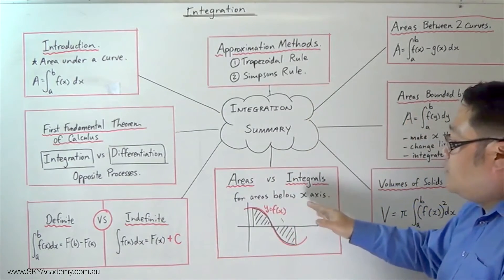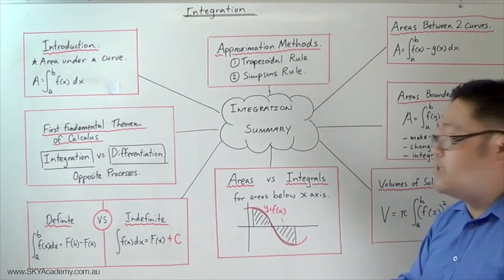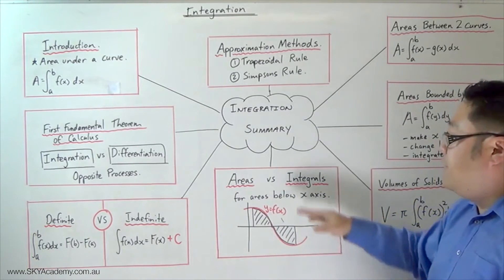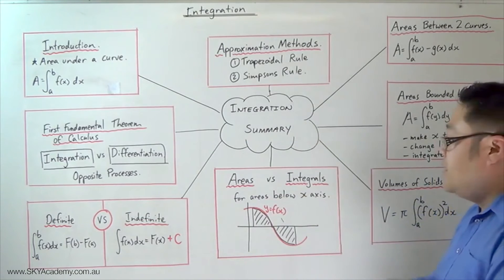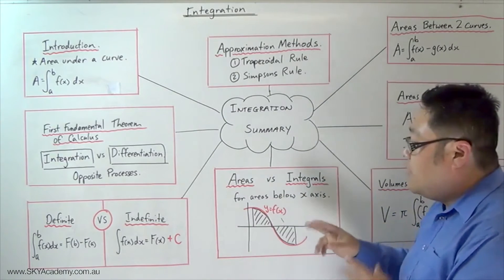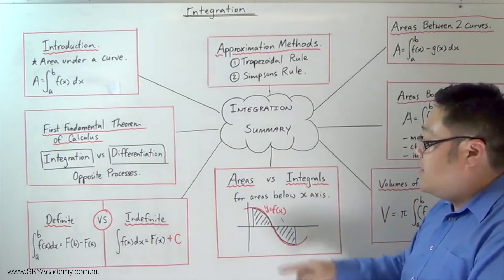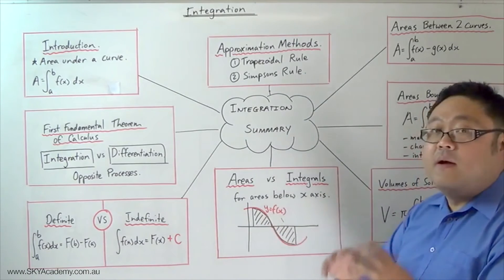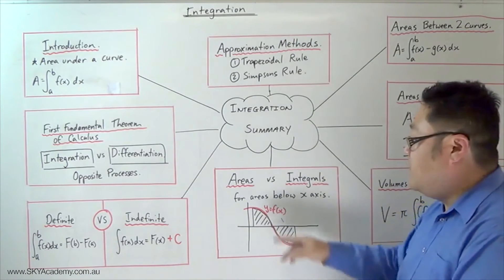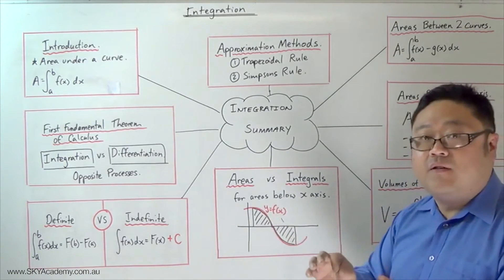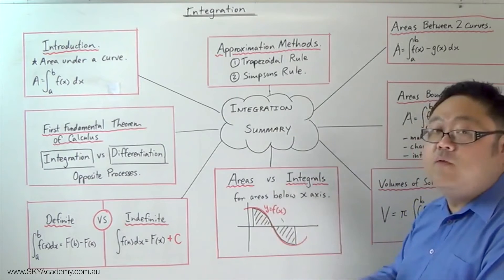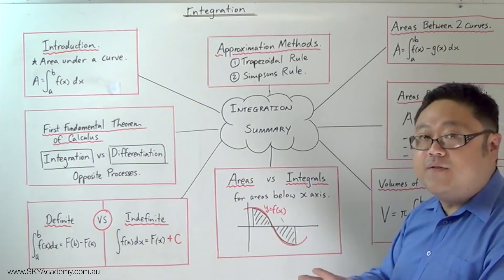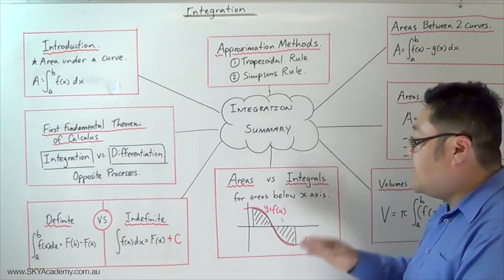Then we looked at areas below the x-axis and we looked at the difference between areas under a curve or bounded by a curve and integrals. Basically what I said was that the area, whether it's above or below the curve, an area bounded by a curve is always going to be positive. Whereas an integral, if it's above the curve, will be positive, and if it's below the curve will be negative.